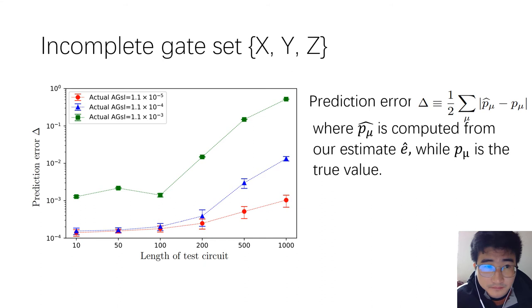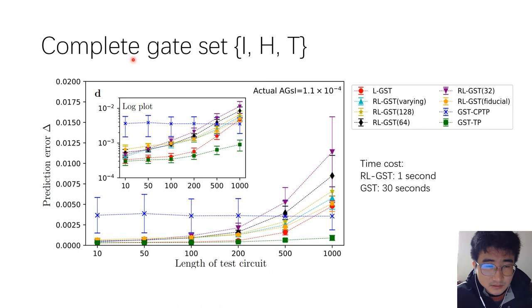Another similar example is a complete gate set: identity gate, Hadamard gate, and T gate. Here, this blue and green line are results from standard GST with CPTP condition and TP condition imposed in optimization algorithm. CP means completely positive, TP means trace preserving.